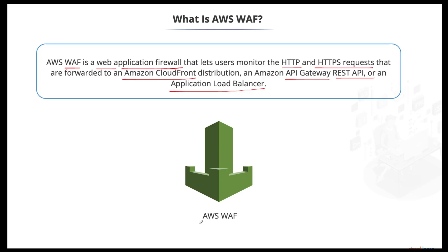Under WAF, we can define what kind of protocol and rules we want to allow in terms of incoming traffic. For example, if the requested URL contains a specific path we don't want to allow, we can simply reject it. If we don't want traffic coming in from one specific location or a group of locations, we can define them as part of the rules. All these things can be done using the WAF service to have a secure deployment for applications on AWS.